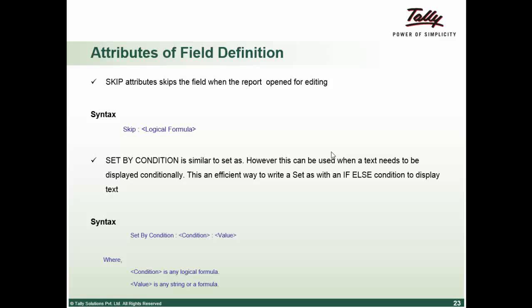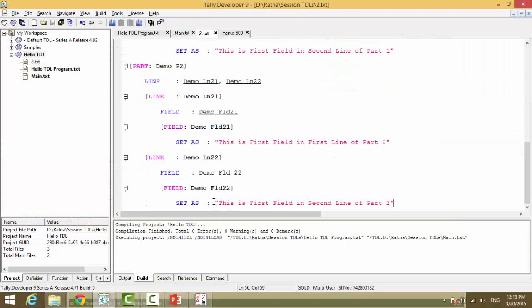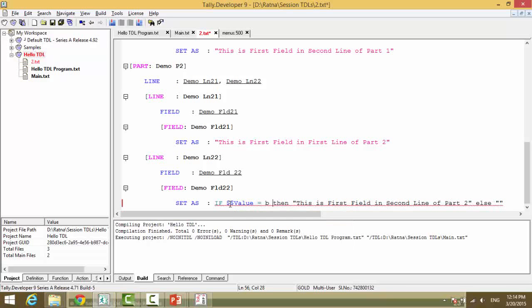Set by condition is similar to set as. However, you can provide your set as text with some conditions. For example, control end. Here we can provide an if condition. If a is equal to b, then this else empty. This is what you can provide in your set as condition.